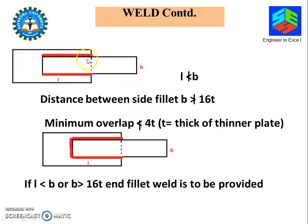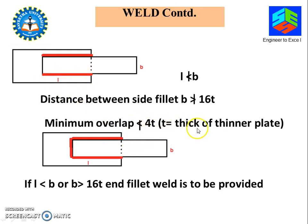When there is lapping — when you do a lap joint using welding — let B be the width of the plate and L be the overlap. At any case, L should not be less than B. This is called a side fillet weld, where welding is done only at the sides. When all three sides are welded, this is called an end fillet. The minimum overlap L_min should not be less than 4T, where T is the thickness of the thinner plate. And if L is less than B or B is greater than 16T, it is mandatory to provide an end fillet weld.